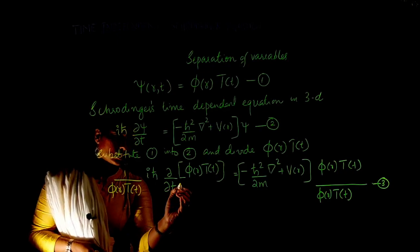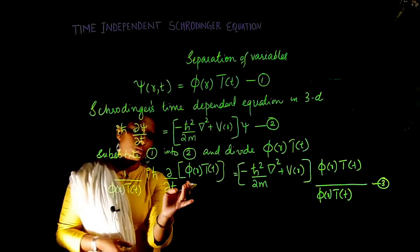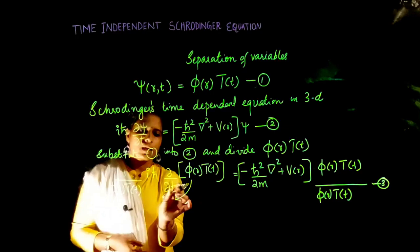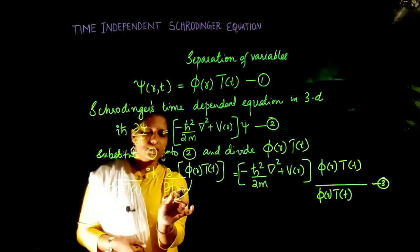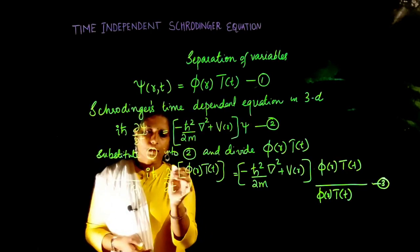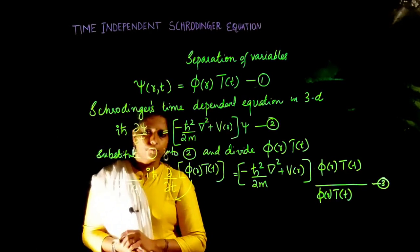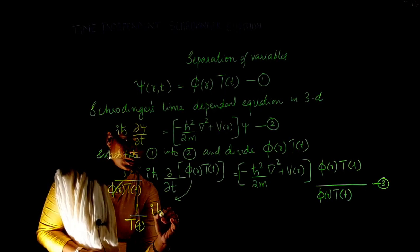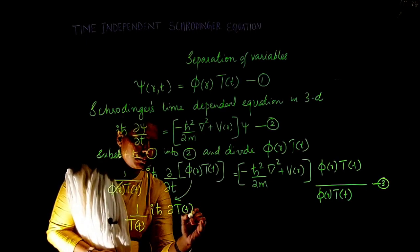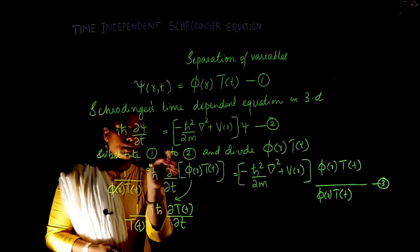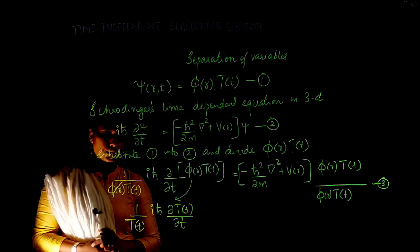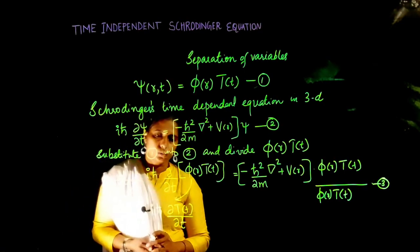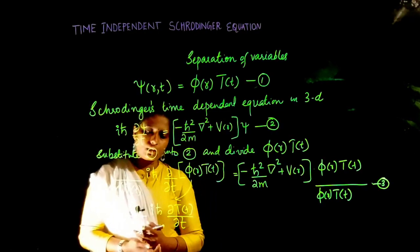Now applying this: when taking the time derivative ∂/∂t, phi of r comes out because it depends only on position. So phi of r cancels with the phi of r in the denominator. In effect, the left-hand side becomes (1/T(t)) · i h-bar · dT(t)/dt.